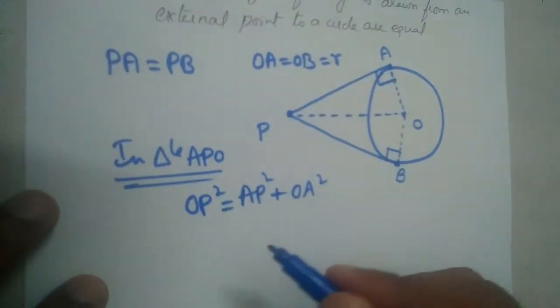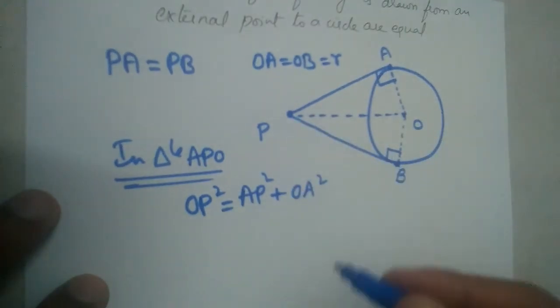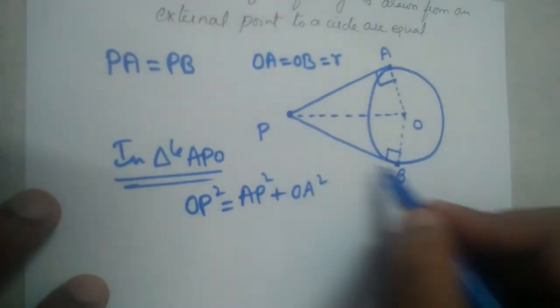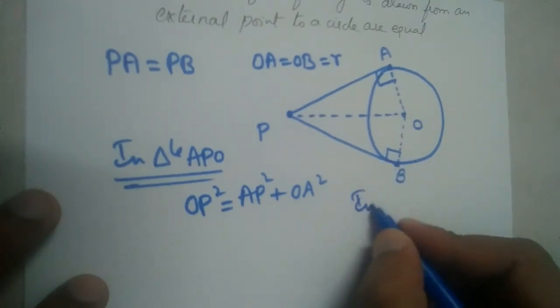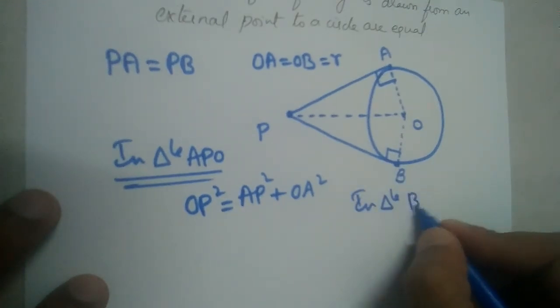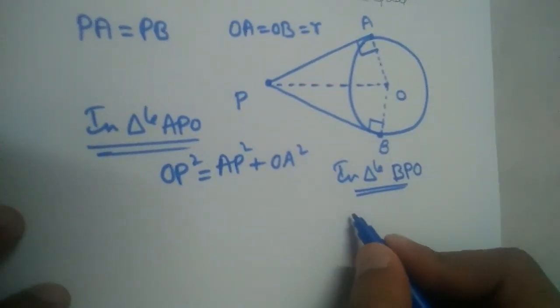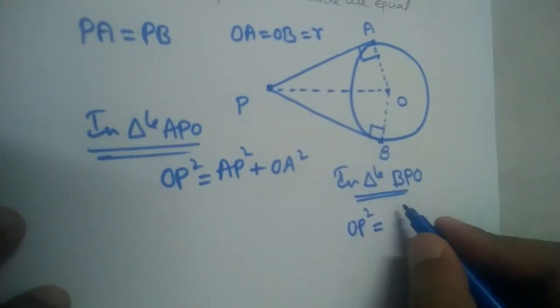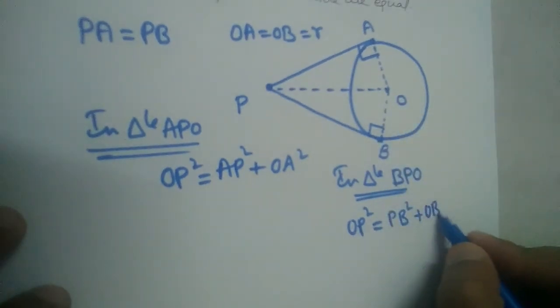And angle B is also 90 degrees because OB is radius and PB is the length of tangent right. So, PB is tangent. So, OB and the tangent, radius and tangent will be perpendicular to each other through the point of contact. So, in triangle BPO, if we apply Pythagorean theorem, 90 degrees at B, so OP will be hypotenuse. OP square will be equal to PB square plus OB square alright.